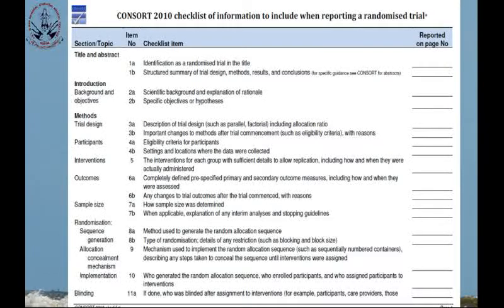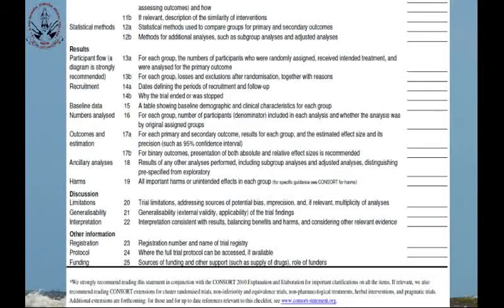Who generated the sequence, who enrolled participants, and who assigned participants to interventions must all be mentioned. For blinding, if it was done, then who was blinded and a description of the interventions if relevant must be stated. For statistical methods, it must be specified what groups for primary and secondary outcomes were compared, which methods were used, and if any other methods for additional analysis — such as subgroup analysis or adjusted analysis — were used.